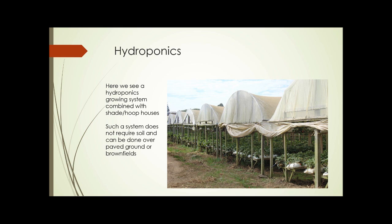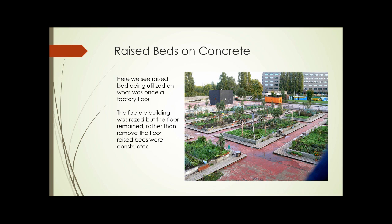Here on this slide we see a hydroponics growing system combined with a combination of hoop and shade houses. Such a system doesn't require soil and can be done over paved ground or brownfields that have not been remediated. It would also be possible to wrap these houses in plastic, supply heat, and grow year-round. Here we see a paved former factory floor — the factory was knocked down but the floor wasn't removed — and the solution was to install raised beds over the entire area, creating a relatively large operation.